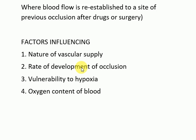The second factor is rate of development of occlusion. Slowly developing occlusions are less likely to cause infarction because they provide time for development of collateral circulation. For example, if one coronary artery is occluded slowly, flow within collateral circulation increases to prevent infarction. The third factor is vulnerability to hypoxia. Neurons undergo irreversible damage when deprived of blood supply for only three to four minutes because they are very vulnerable to hypoxia.